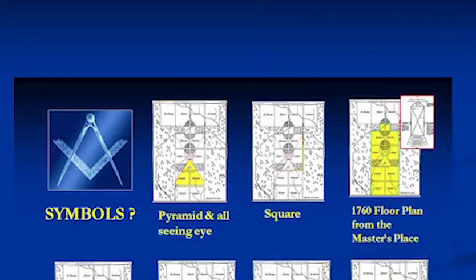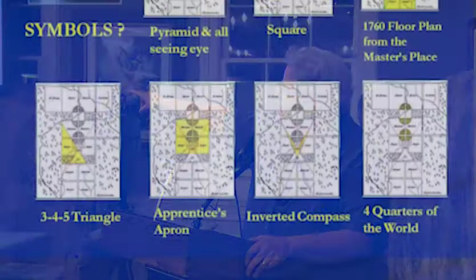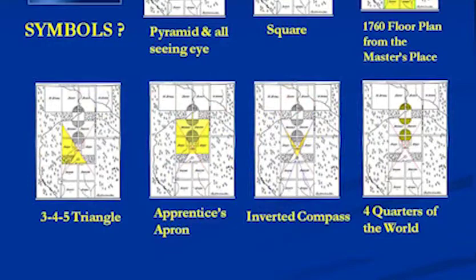On the right-hand side, between Benjamin Wright's map and Faroe's map, the entry road has changed from an irregular jig to a square — a right-angle square. In the upper right, you have a 1760 floor plan, the master's plan. It's an exact copy of it. You have the 3-4-5 triangle, an image of the apprentice's apron, an inverted compass. You know how the Masons have the square and the compass? This is inverted, and that has special significance within the Masonic lodges. And you have the four quarters of the world.